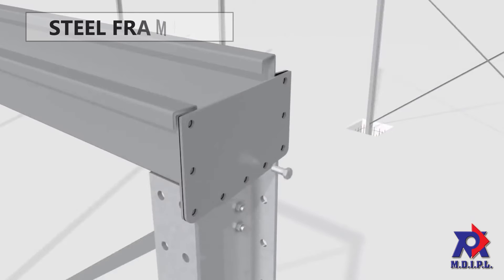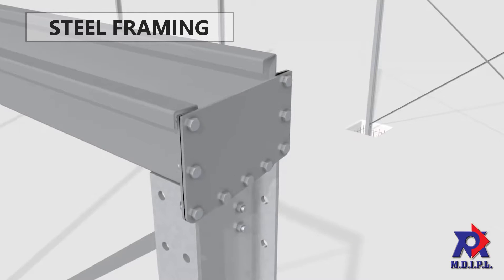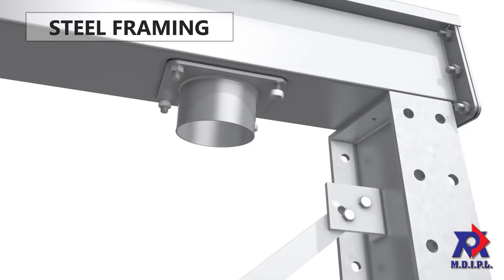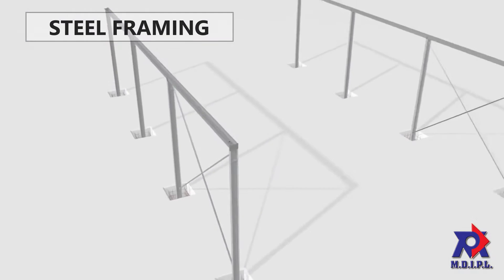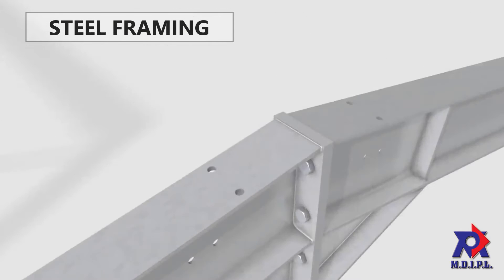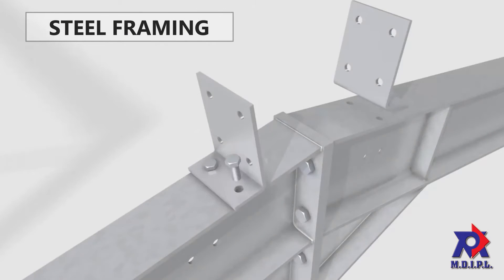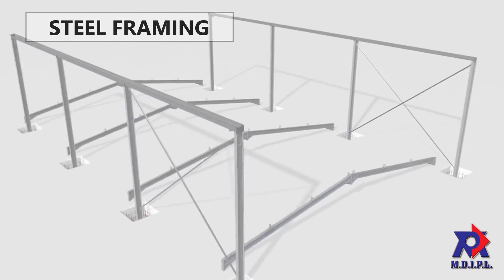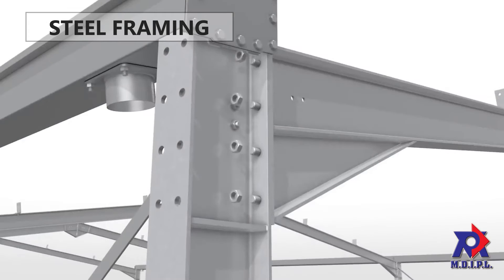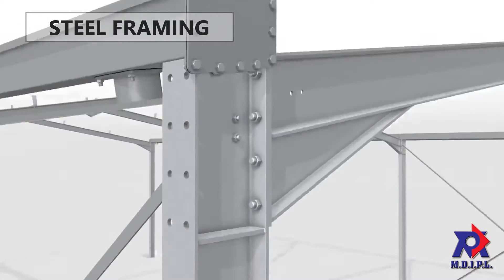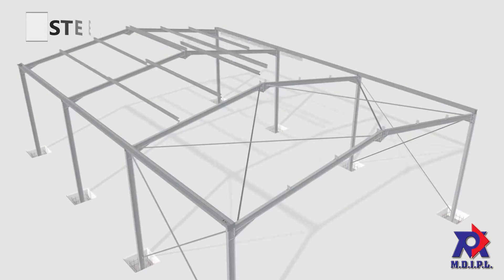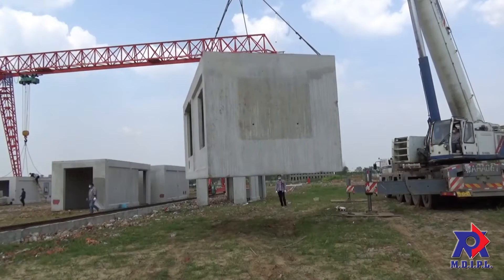Next is steel framing. For ages, steel has been one popular and trusted building material for commercial and residential construction. Steel framing uses this strong and durable material to create prefab panels that can be used to construct buildings.